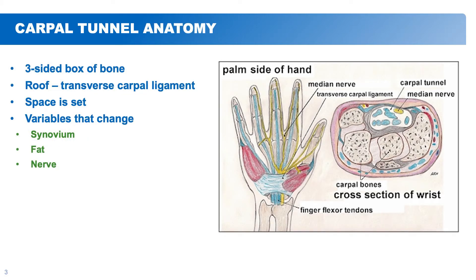The carpal tunnel is in your wrist. It's a small cylindrical area that contains many flexor tendons that allow you to bend your fingers, and it is surrounded by the carpal bones. Three sides of the box do not allow any kind of movement whatsoever, so if you have any swelling or positional changes, that can put pressure on the nerve and cause numbness, tingling, and pain. Different things that can cause pressure there include synovitis, inflammation around the soft tissues, positional changes, or inflammation in the nerve.